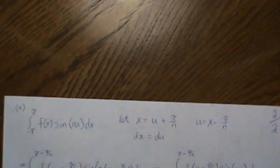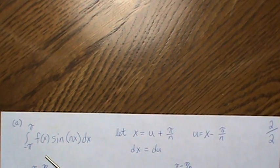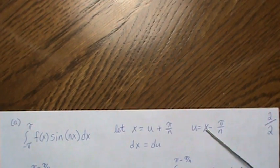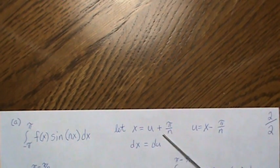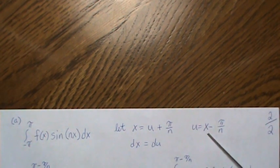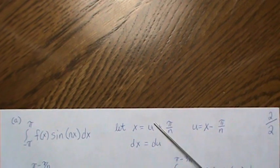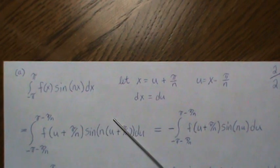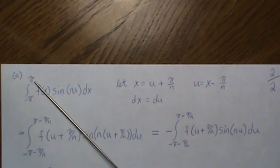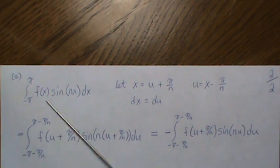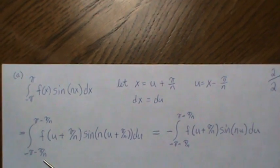So let's look at the first one here and do a variable change: x equals u plus π/n, so you can back solve for u. dx equals du. Take this information and plug it in, and that's what we get here. I changed the limits of integration also.